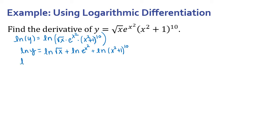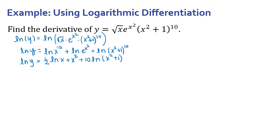Continuing to simplify: the square root of x is x to the 1/2, so that 1/2 moves in front, giving 1/2 · ln(x). Using the power property, x² moves in front of ln(e), and since ln(e) = 1, that term simplifies to x². And ln((x² + 1)^10) becomes 10 · ln(x² + 1). So now I have 1/2 · ln(x) + x² + 10 · ln(x² + 1), which is much simpler to differentiate — no product rule needed, just the chain rule a couple of times.